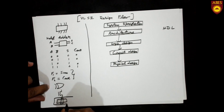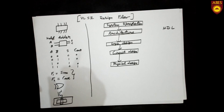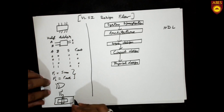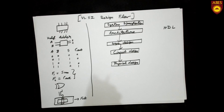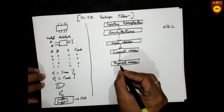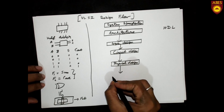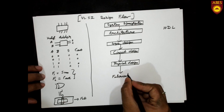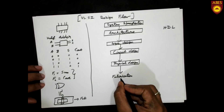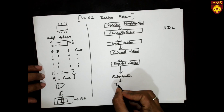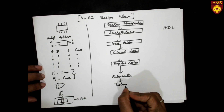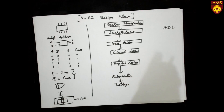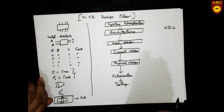After getting the layout, the next step is to send it to the fabrication unit for processing to fabricate the chip. After fabricating the chip, the final step is testing of that chip before sending it to market for commercial purposes.